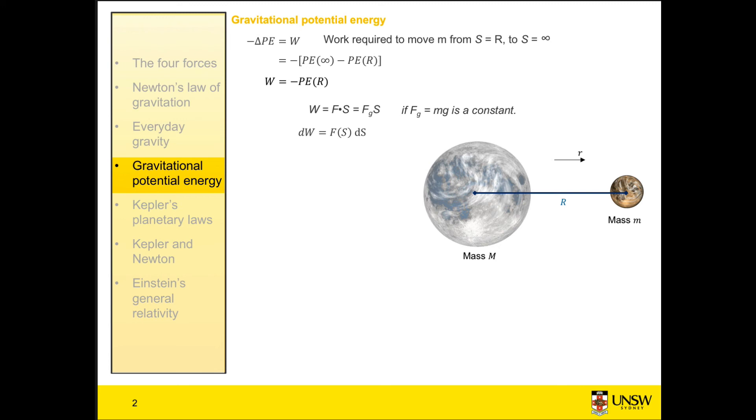To find the work done over the range of displacements we're interested in, we integrate over that range. And solving that integral, we find that the work done by gravity at a distance r is equal to minus GMm over r.